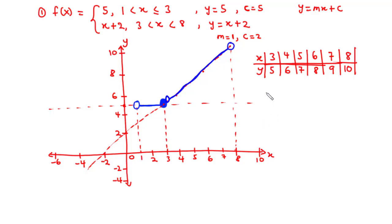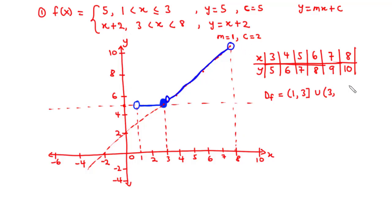Now let's determine the domain and range. For the domain, considering f(x) = 5, the domain is the interval between 1 and 3. Since 1 is an open circle, 1 is not part of the set, giving us (1, and since 3 is a closed circle, it is included, giving us 3]. Then union with the second function x + 2, which has an open circle at 3 and an open circle at 8. Combining, the least x value is 1 and the greatest is 8.